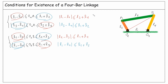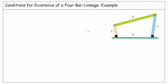Therefore, these four conditions must be met for the existence of a four-bar linkage. Now let's have an example to practice and see how we can use these conditions. In this four-bar linkage, we want to know in which range of the length of the base link the linkage can exist. The lengths of the other links have been given. Apart from L1, which is X and needs to be determined, L2 is 2, L3 is 7, and L4 is 4 units.